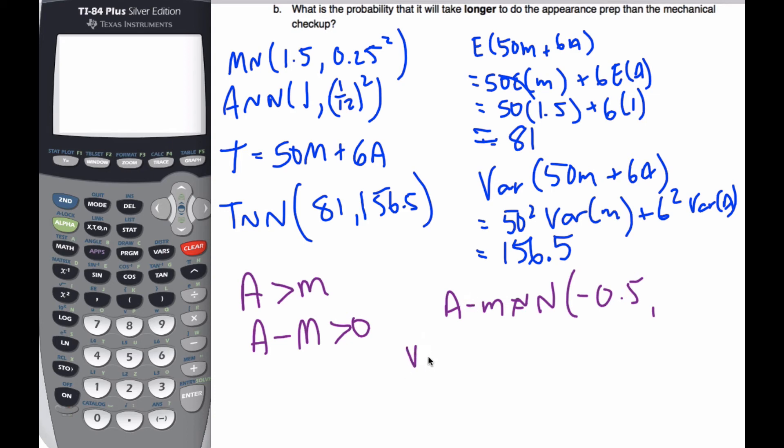My variance, though, so if I want to do my variance of A minus M, I have to be careful here. I know it's going to be the variance of A plus, be careful here, it is plus because the variation is getting larger when I combine variables. And so it's going to be 0.25 squared plus 1/12 squared. And when I do that, I know that has a variance of 5 out of 72.